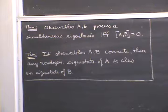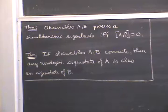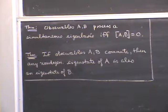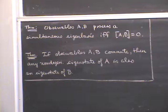A simultaneous eigenbasis means, first of all, a basis; second, the basis vectors are eigenvectors; and third, they are eigenvectors of both A and B at the same time. I outlined the proof of the first part — that if A and B commute they possess a simultaneous eigenbasis — at the end of last hour. The converse is fairly easy. I'll just remark that this is quite an important theorem of quantum mechanics, as we'll see as we go on.